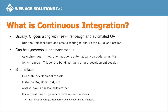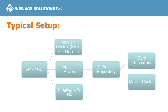We always have an installable artifact. Plus, the CI system can generate development metrics like test coverage, code standards compliance, and static bug analysis. The typical setup has a Jenkins instance talking to our version control, build system, and our QA or staging servers. The build system has links to an artifact repository, which also draws artifacts from the corporate or public repositories. As we go on in this series, we'll talk about the build system and the artifact repositories, but for now we'll just focus on Jenkins.